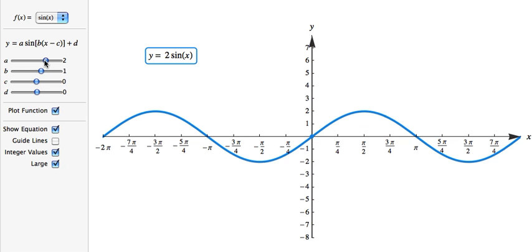So we're going to increase a by 1. So now the value for a is 2. And notice what happened to the sine function. All the x-intercepts are the same. The period remains the same. All it did was it increased the y value.